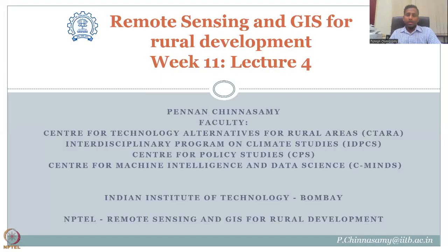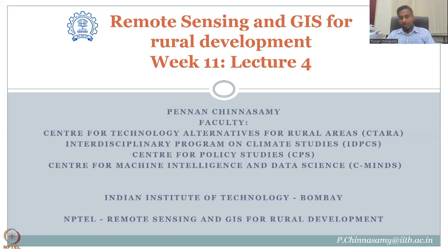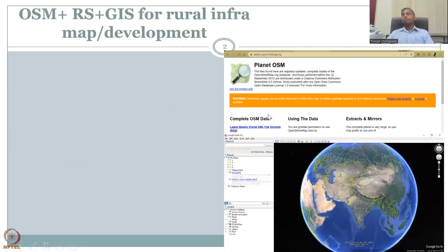Hello everyone, welcome to the NPTEL course on Remote Sensing and GIS for Rural Development. This is week 11, lecture 4. In this week's series, we have been looking at the concept of synergized mapping for creating multiple data sources with remote sensing data for updated rural data management. In the last lecture, we looked at using OSM data and remote sensing data on the GIS platform QGIS for rural infrastructure mapping, especially schools. In today's lecture, we will start with hospitals and also try to map aspects like road connectivity.